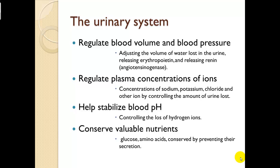How would it adjust blood volume and blood pressure? Through loss of water, loss of urine, EPO which adjusts red blood cells, and renin. Renin is part of the aldosterone-angiotensin chain. Angiotensin 1 gets converted to angiotensin 2, and both are located in angiotensinogen, which we'll talk about later in this section.